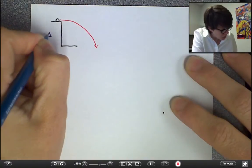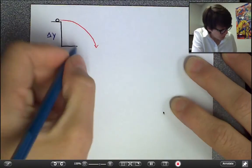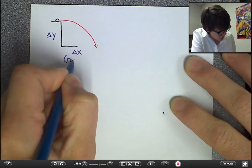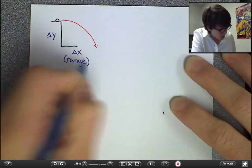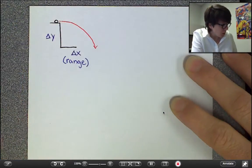Based on this picture, a couple of things. Delta y is the height of the table. Delta x is the horizontal range of the marble. In other words, how far it travels horizontally.